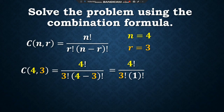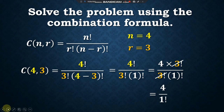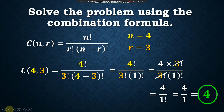Remember that four factorial can be expanded as four times three factorial. So we can divide out three factorial in the denominator and in the numerator. What remains now is four over one factorial. One factorial is just one, so simplifying further, we arrive at four. There really are four triangles formed. Did you get it? I hope you do because we will proceed to the next example.